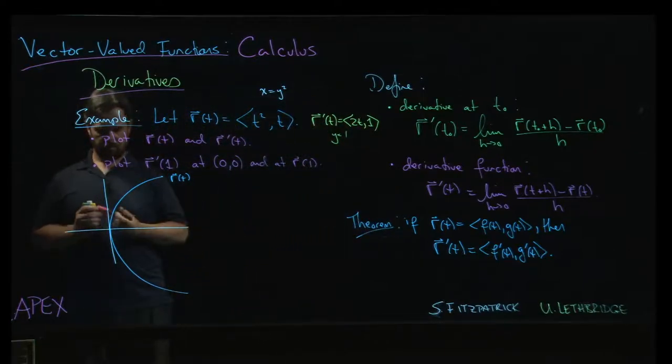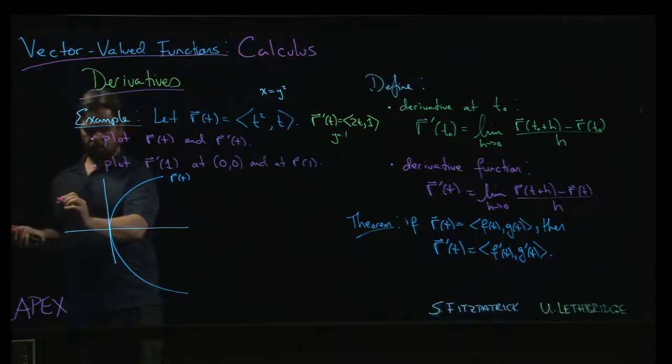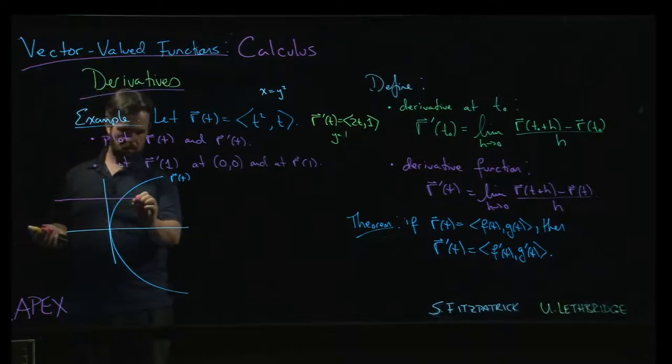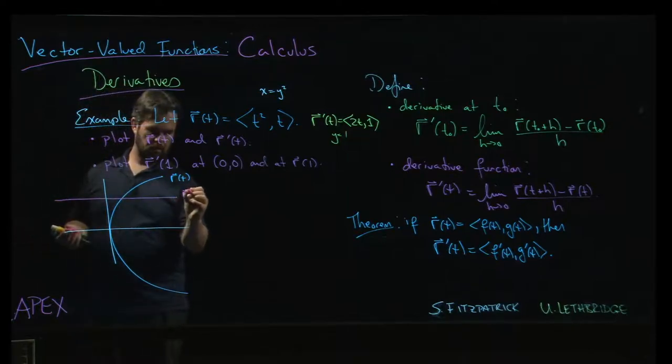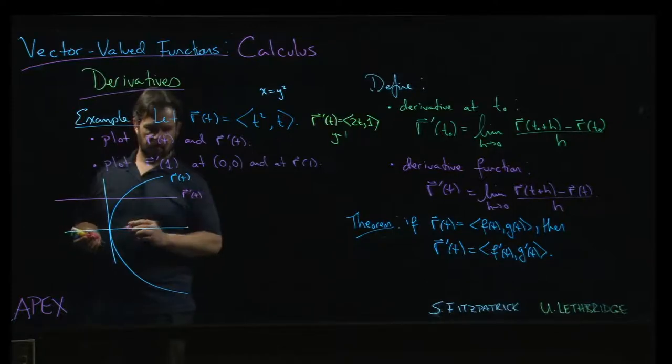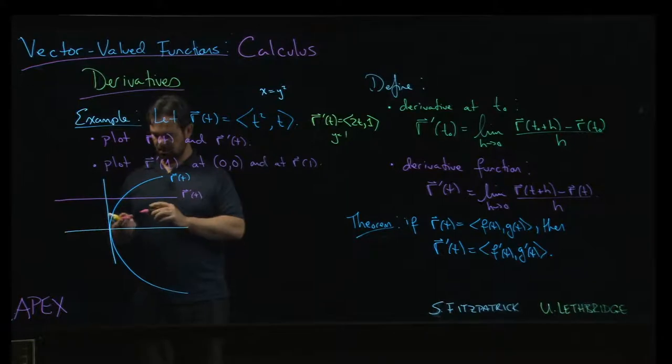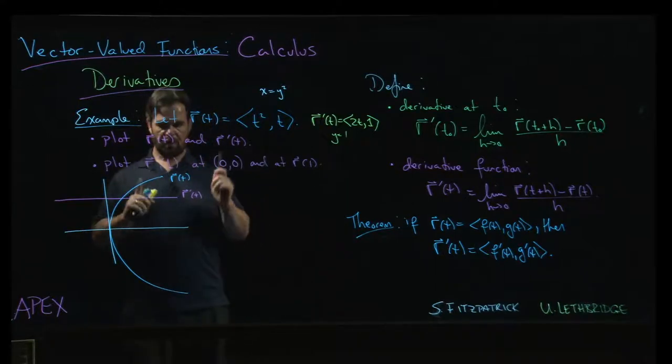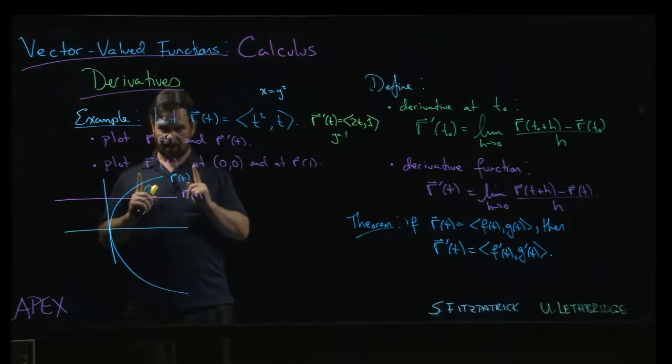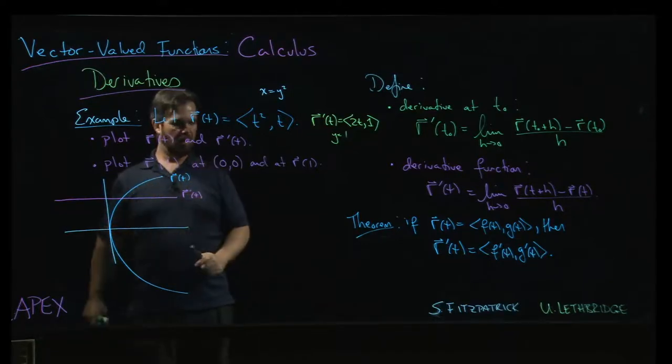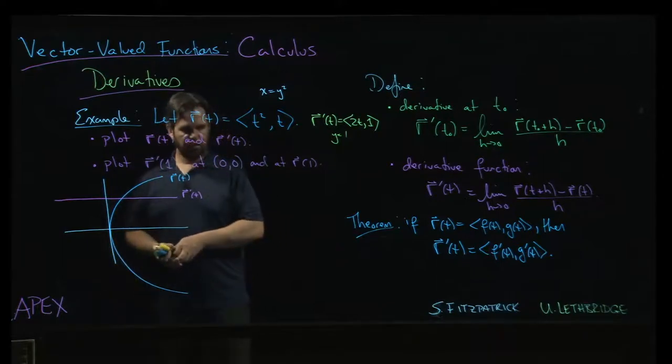We get something that looks like that. Okay, that's maybe not so enlightening. What's more interesting is to think about plotting individual vectors from our vector-valued function for the derivative and plotting them.